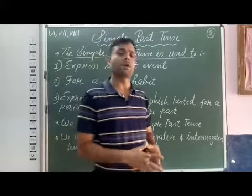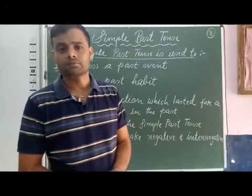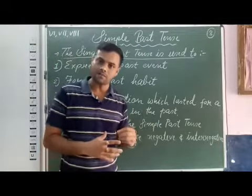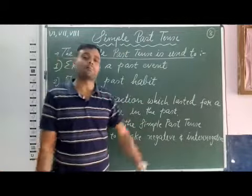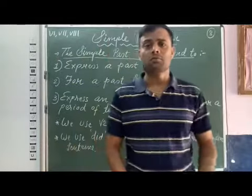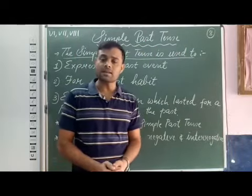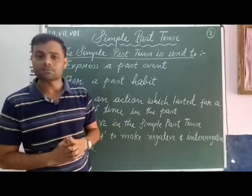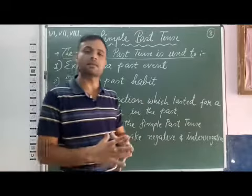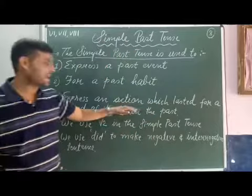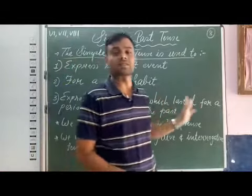If you remember present perfect tense and present perfect continuous tense, these two tenses we use to describe an action which started in the past and continued into the present. But to express an action which lasted for a period of time in the past, we use simple past tense. For example: I worked in the Salvation Army English Medium School for 3 years. He served in the multinational company for 10 years. Here we can see the time duration mentioned and the action was of the past.